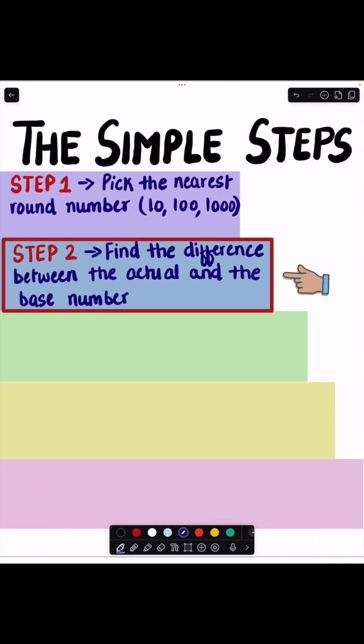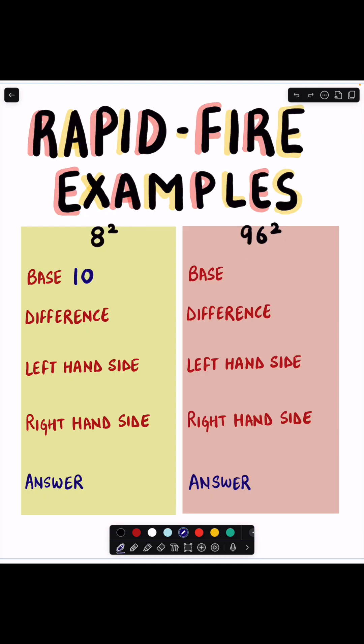Step 2: Find the difference between the actual and the base number. So our base number is 10 and our actual number is 8, and when we subtract them both we get 2.